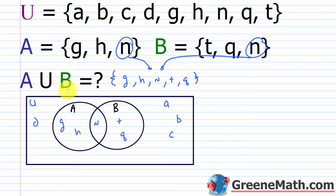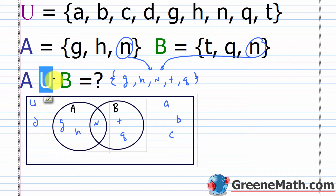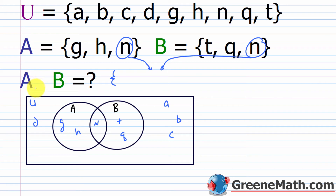What about the intersection? The symbol looks like an upside-down U. I'm looking for the overlap between the two sets on the Venn diagram. The overlap is just n. So A intersect B equals the set containing just n.